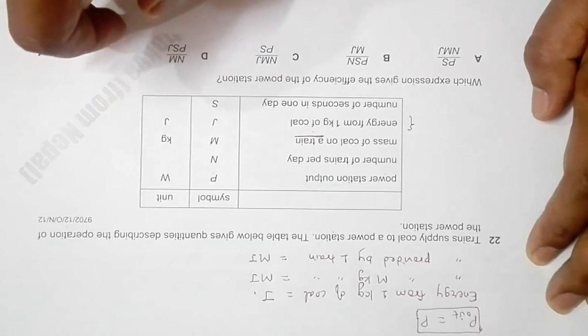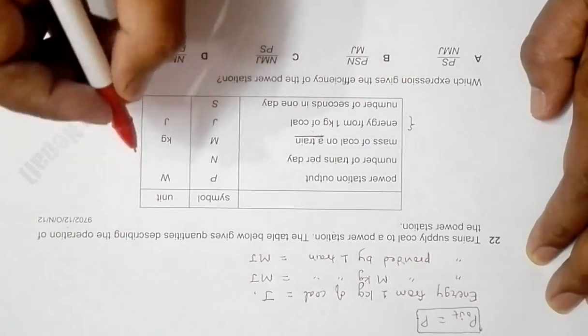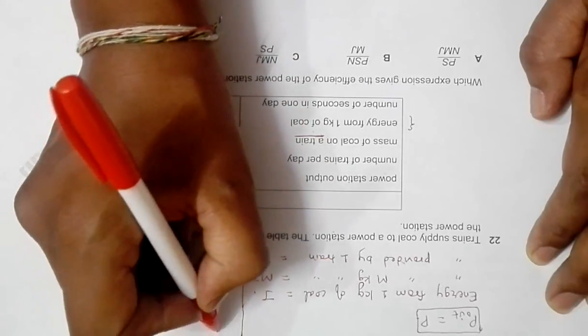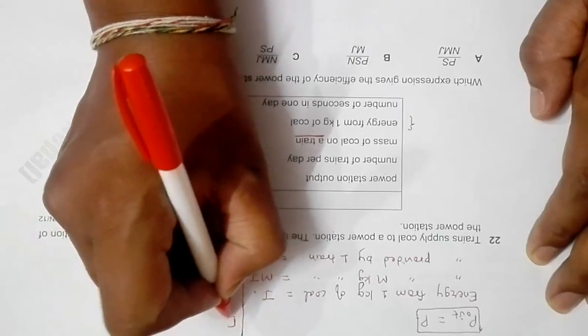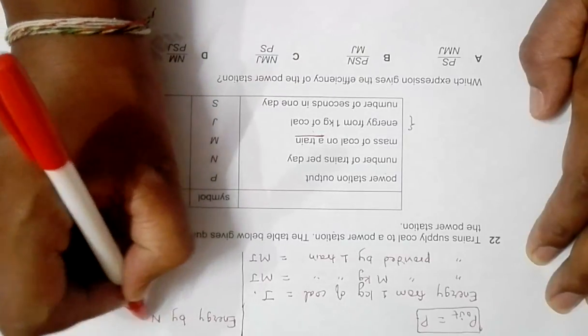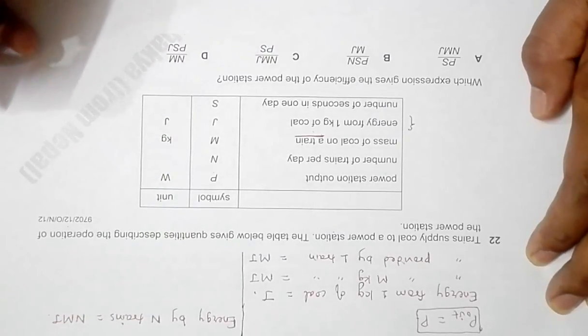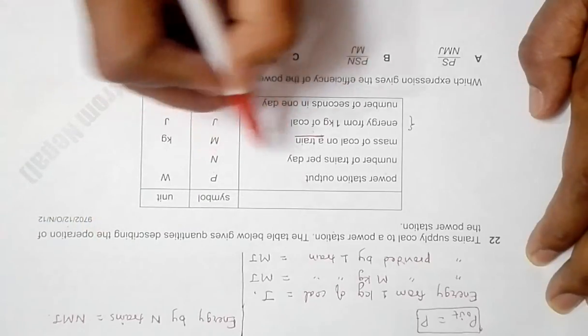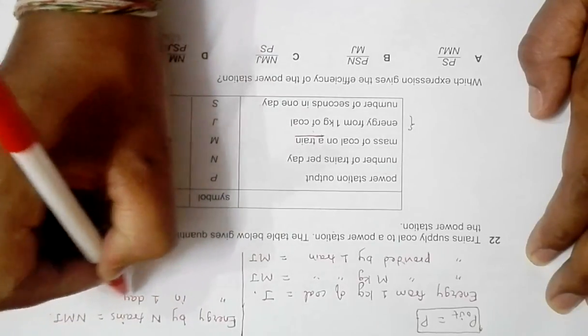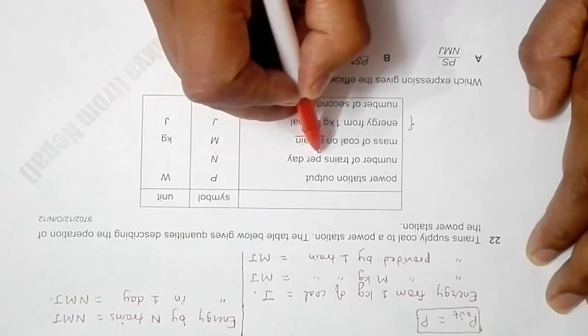Next, we have number of trains per day equal to n. So that means we have energy provided by n trains is equal to nmJ. Definitely, we should multiply it. Now since n trains is equivalent to one day, that means energy in one day is equal to nmJ, because n trains is equivalent to one day.